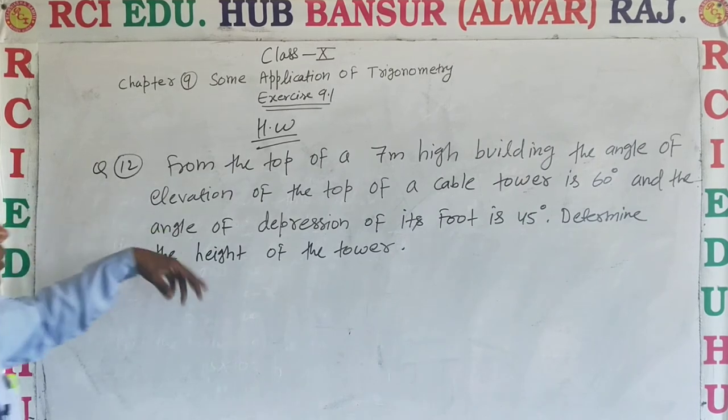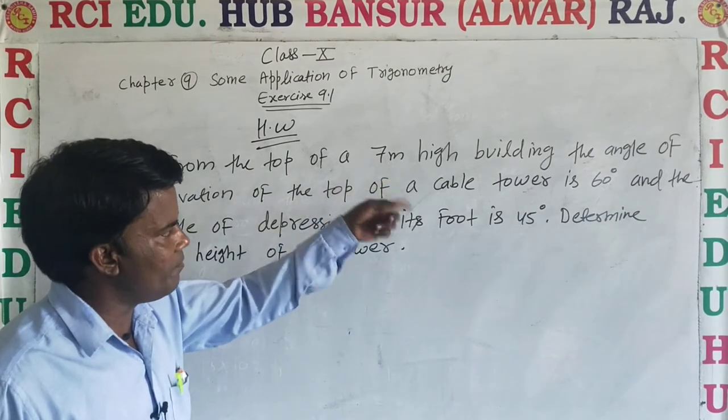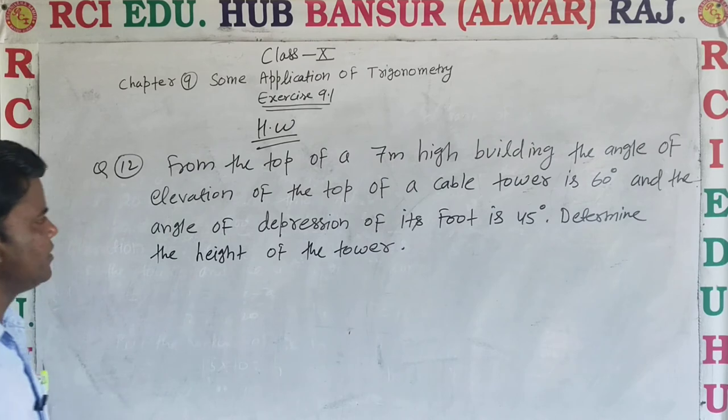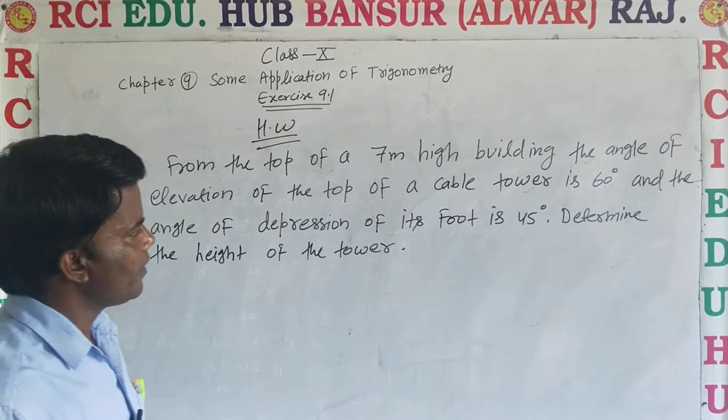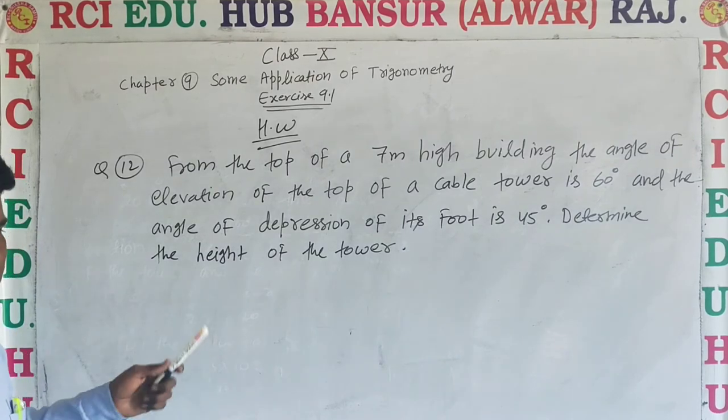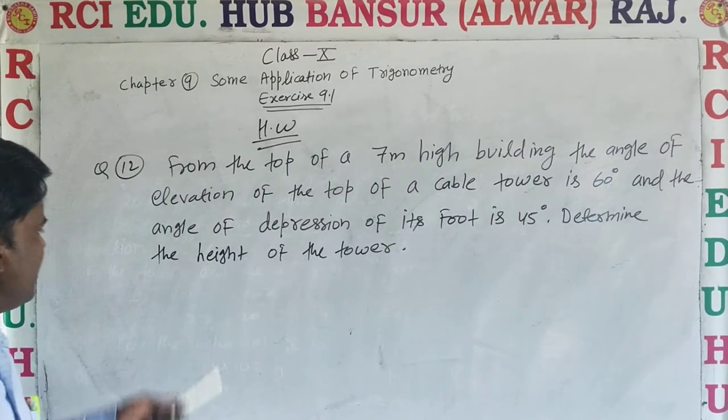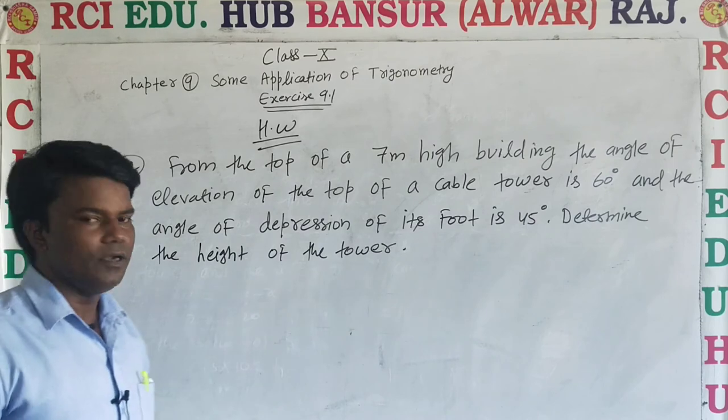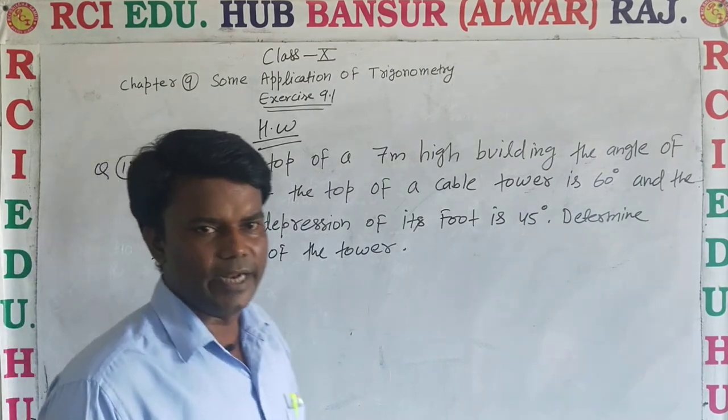Question 12: From the top of a 7 meter high building, the angle of elevation of the top of a cable tower is 60 degrees and the angle of depression of its foot is 45 degrees. Determine the height of the tower. Thank you students.